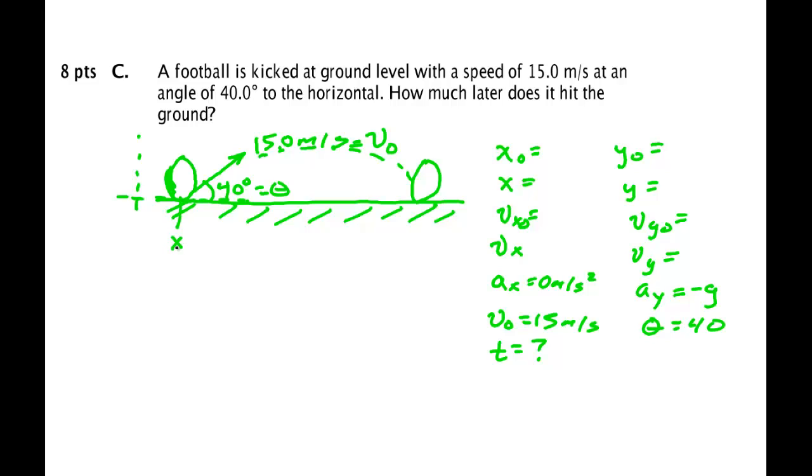I'm going to declare this as X not equal zero meters. I don't know what this value is. Zero meters. I'm going to declare this as Y equals zero meters. So both Y not and Y are zero meters.